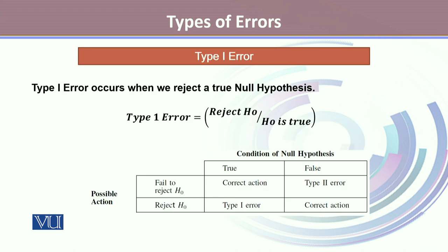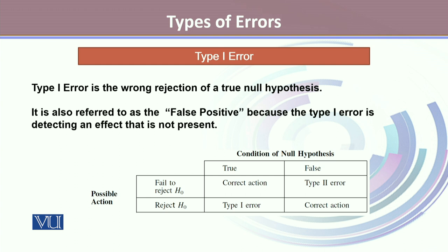Type I error occurs when we reject a true null hypothesis. It is rejecting H0 given that H0 is true. Type I error is the wrong rejection of a true null hypothesis. It's also referred to as false positives because Type I error is detecting an effect that is not present.